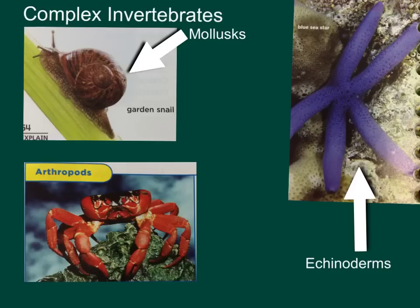Echinoderms use water pressure to help them feed, breathe, and move. Seawater enters the system and moves to different parts of their body under pressure. The system ends in the echinoderm's tube feet, which cling to surfaces like suction cups — and that's why the sea star sticks to things.